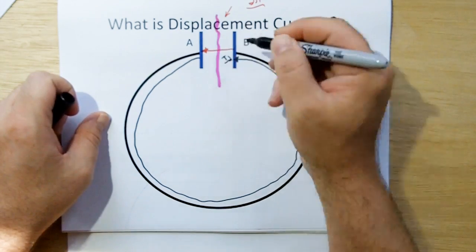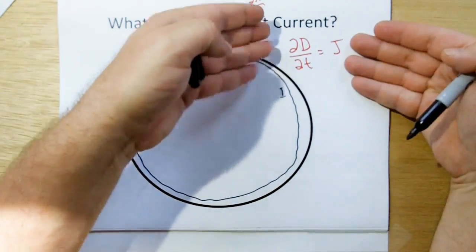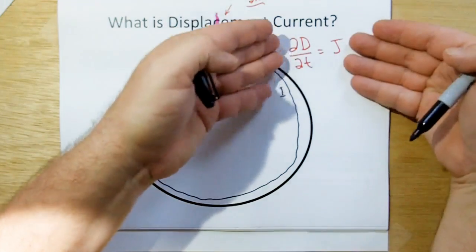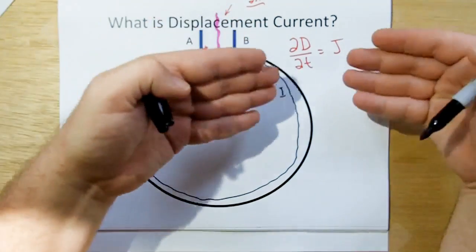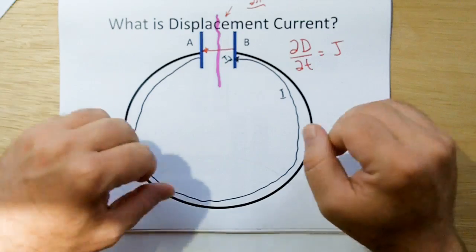And so he called that the displacement current. And what I'm showing you here, these are the point forms of Maxwell's equations. The point forms and the integral forms basically tell the same story.